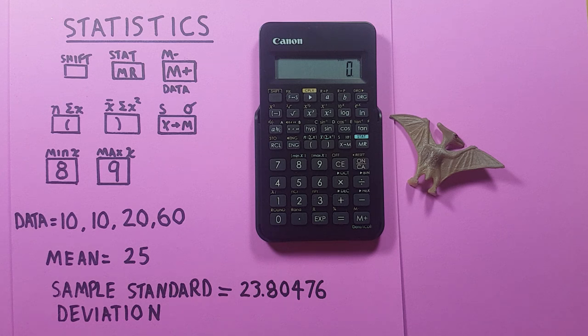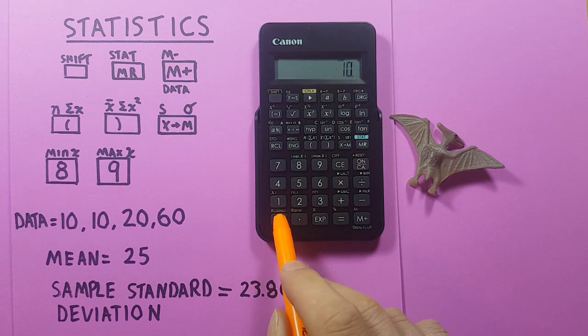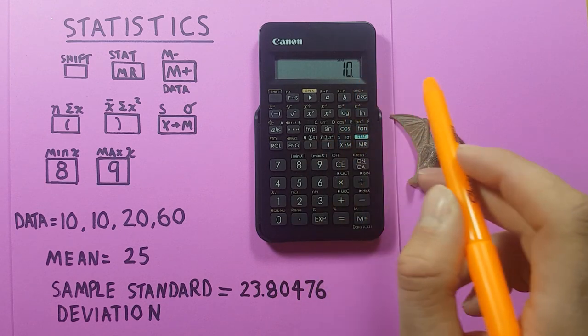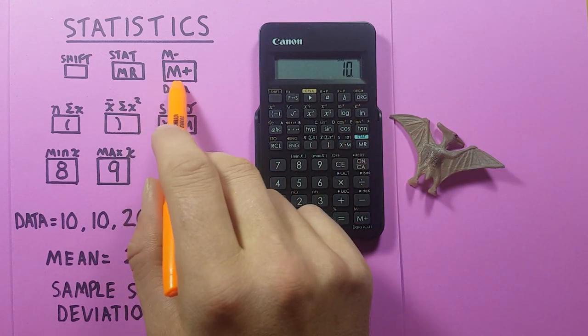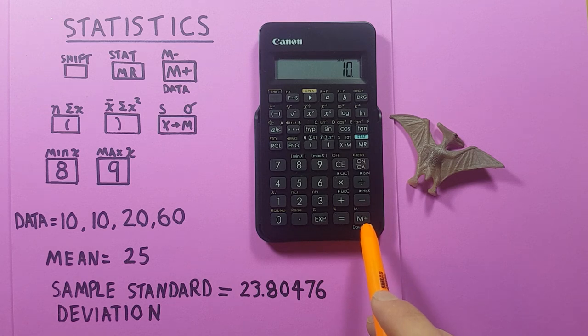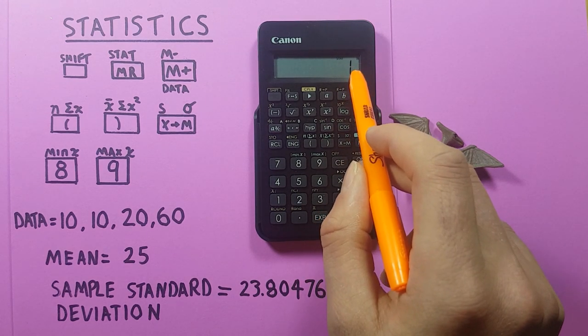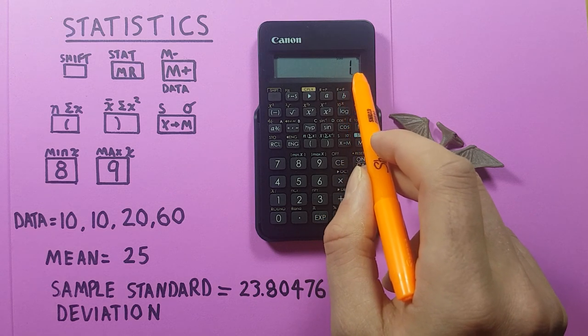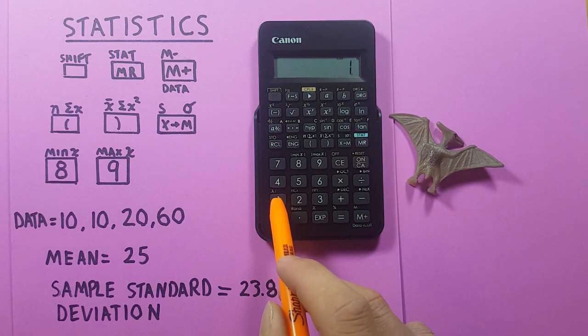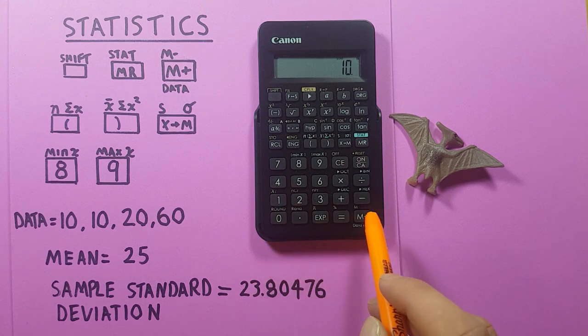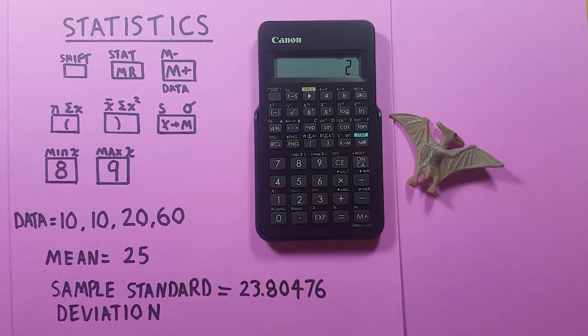So to get started we place 10, which is our first measurement, on the screen and then press the M plus key which will add the data to our data set. So there we go and we see one appearing letting us know that there is one item in our data set. Put the next 10 on there, M plus, two items in our data set.